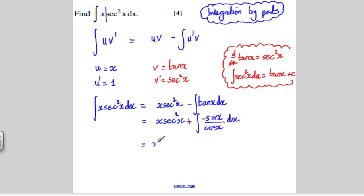This is the integral of x sec squared x plus ln of cos x. And finally, make sure you don't forget your constant of integration. There's usually a mark for that, plus c.